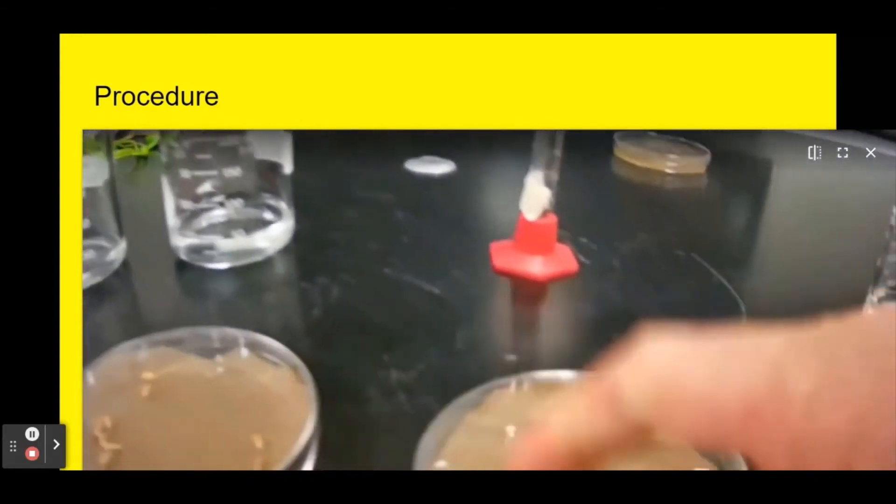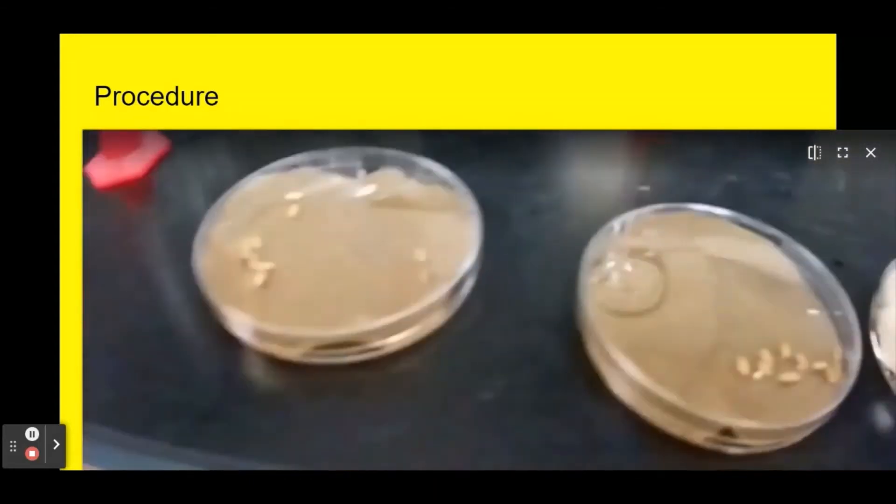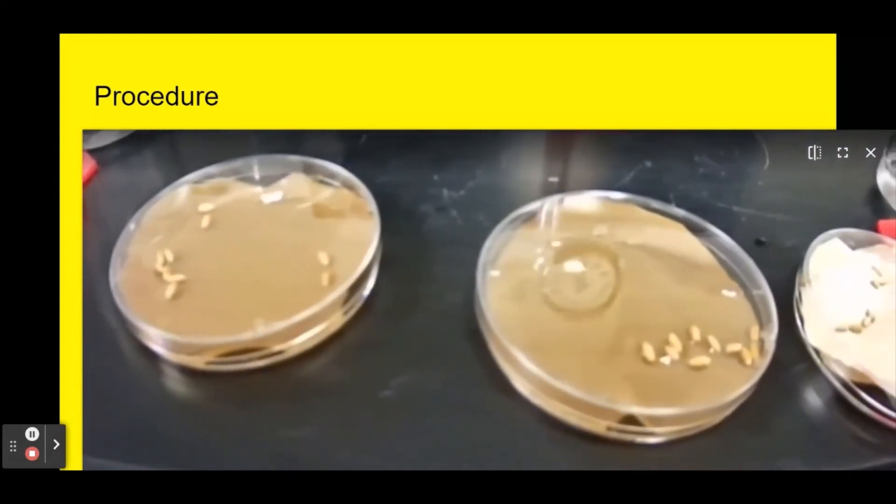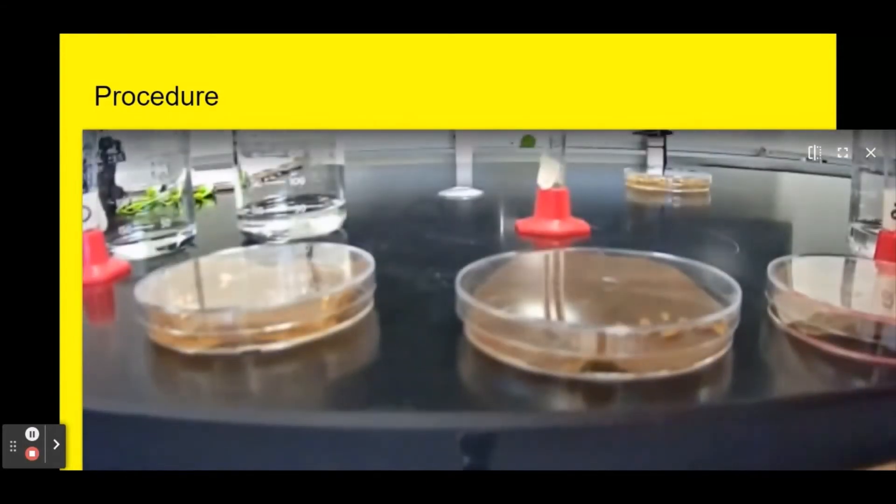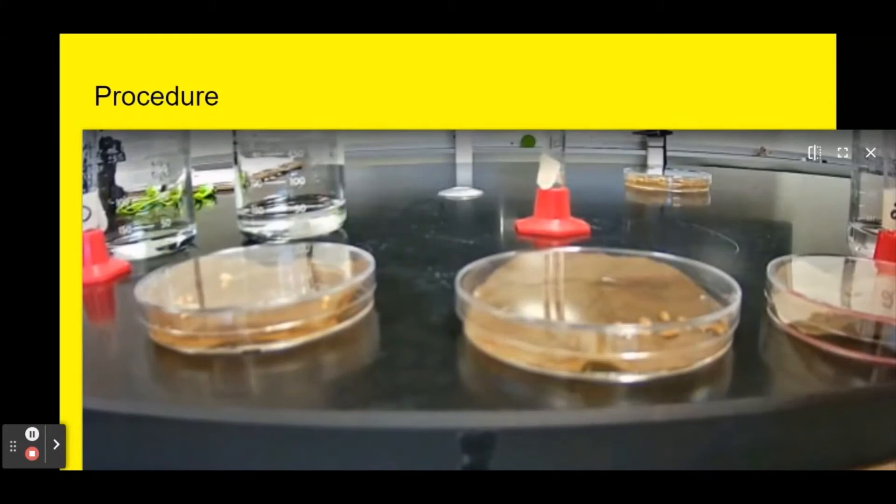The last step is I'm going to label each tray so I can keep track of which tray is which, and then I'm going to put them in a dark location for three days. In my case I actually put them in one of the drawers in my classroom. After three days we're going to count how many of the seeds have germinated.